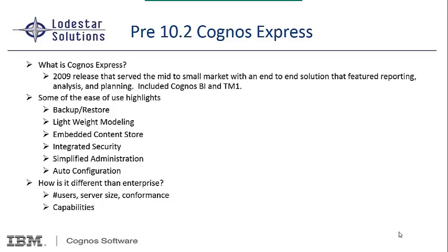What's Cognos Express? Back in 2009, it was released as a mid-to-small market end-to-end solution that featured reporting, analysis, and planning. It really was Cognos BI and TM1 wrapped up in its own little package. It was easy to use, had backup and restore capabilities built in, provided some lightweight modeling, had an embedded content store, integrated security different than the Enterprise solution, and a very easy administration panel with a lot of auto-configuration so it was somewhat out of the box. The main differences between Express and Enterprise are the number of users — limited to 100 — server size, conformance, and some capability differences.